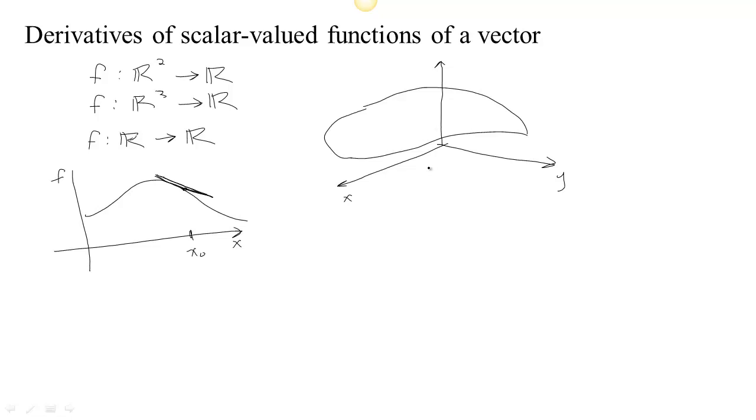Well now, we could think about, because we have two inputs or a vector of inputs, there's a direction that we could travel in. There's all sorts of directions we could travel in. So starting at some point (x₀, y₀), we could travel along the x-axis.